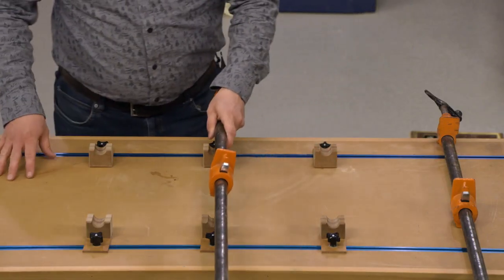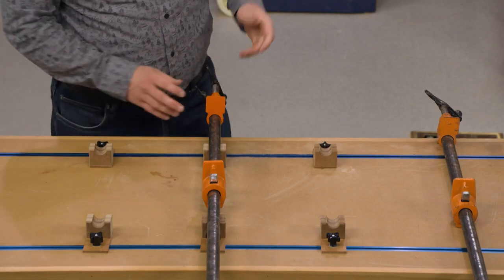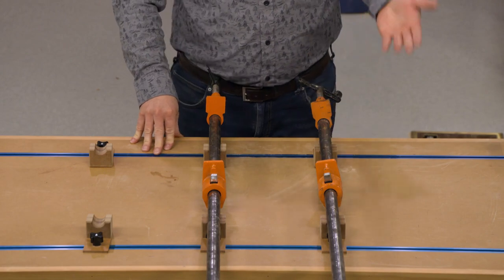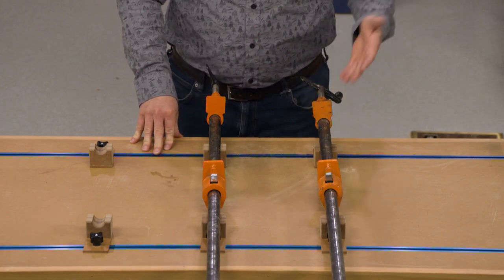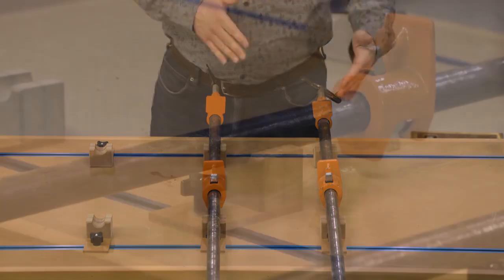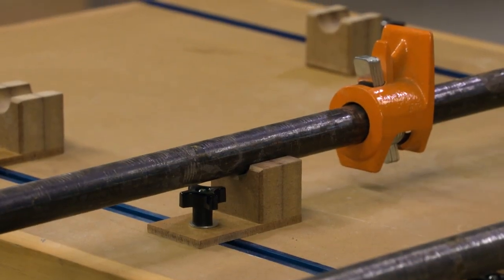Now when you get set up to glue up a panel, you can just set your pipe clamps in place. The nice thing is that the pipe clamps aren't going to wobble about. They're all at the same height so that you can get the boards set in place and glued up without having to worry about your clamps.